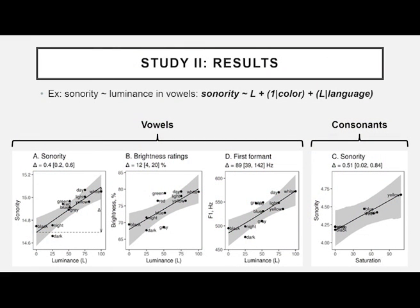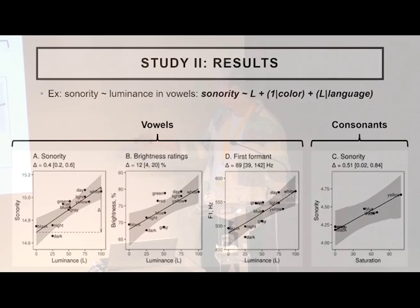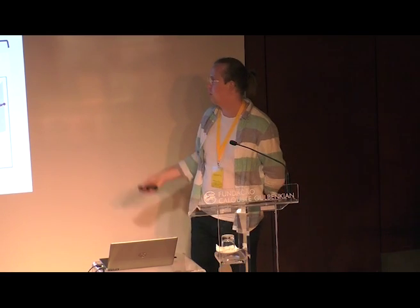The results in short show that for vowels, luminance was associated with sonority — high sonority, high luminance — so white had high sonority sounds, high luminance and brightness ratings, and high first formant frequency. For consonants, on the other hand, we found saturation and sonority values that appear significant, though somewhat weaker, and there seems to be a division between how vowels and consonants function.